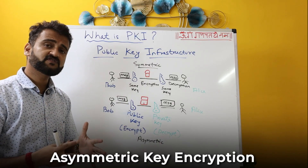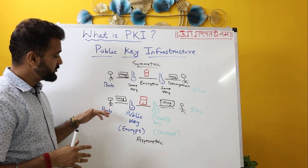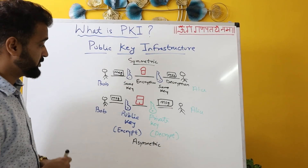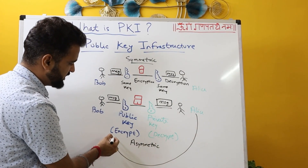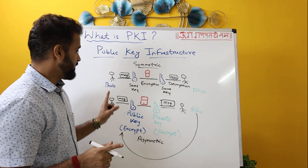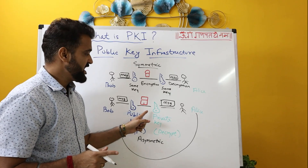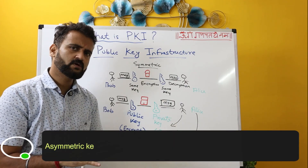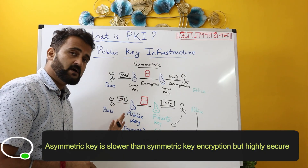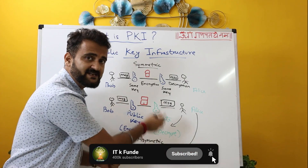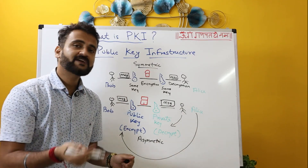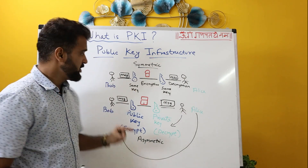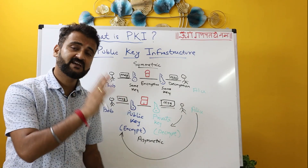In asymmetric key encryption comes the concept of public and private key. In this scenario, if Bob wants to send a message to Alice, Bob will first ask Alice to provide her public key. Alice will provide her public key to Bob, and using Alice's public key, Bob will encrypt his message. This will be sent over the internet and then Alice can decrypt it using her private key. That's what makes it very secure. Obviously it is slower because it is time-consuming — you encrypt with a different key and then decrypt. But understand that this private key is only with Alice, so even if the message gets intercepted, no one in the world could decrypt it. In PKI, we always work on asymmetric key encryption, which is a set of public and private key pairs.